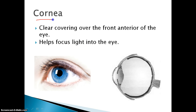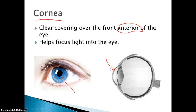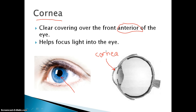Our next structure is the cornea. The cornea is a clear covering on the front, otherwise known as the anterior side of the eye. It helps to focus light into the eye. It's a very thin, clear covering. It's also possible to scratch the cornea; however, it's one of the fastest healing portions of your body — a scratched cornea would heal pretty fast, probably within 24 hours.